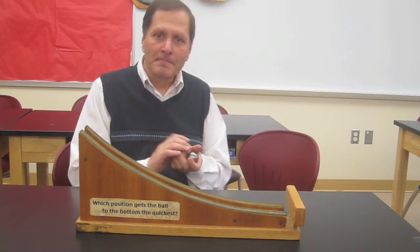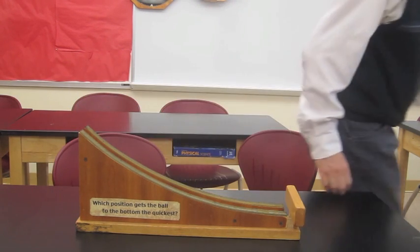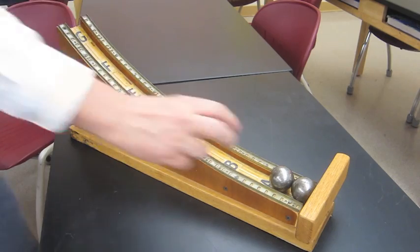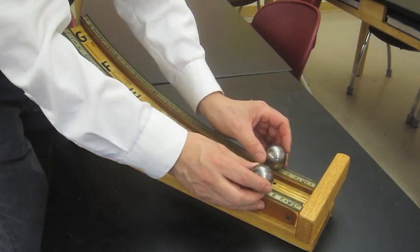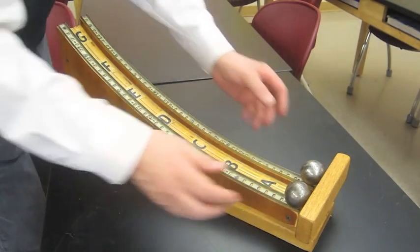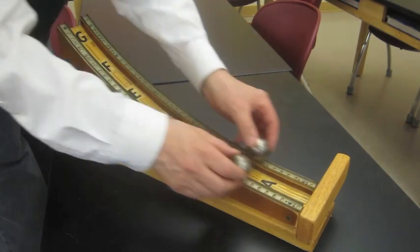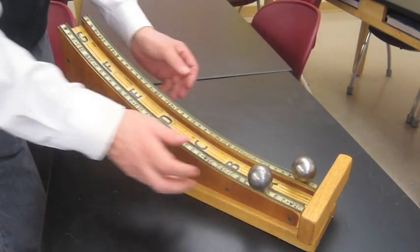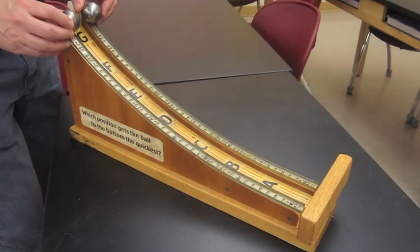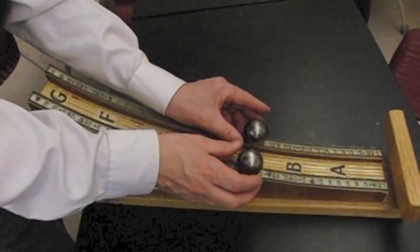Let's try it and see. Let's start out by releasing the balls from the same position at the same time and see if they hit the bottom together. They should because it's the same identical track on both sides, and the ball should accelerate at the same rate and reach the bottom together. And that's what we're seeing.